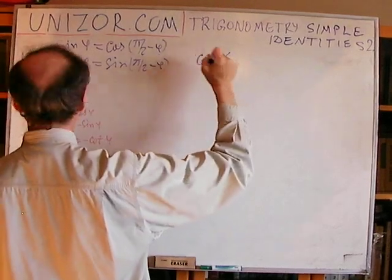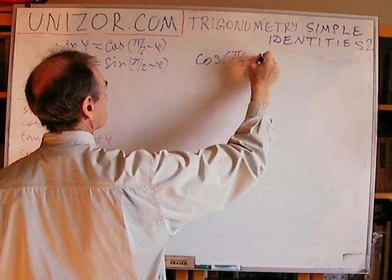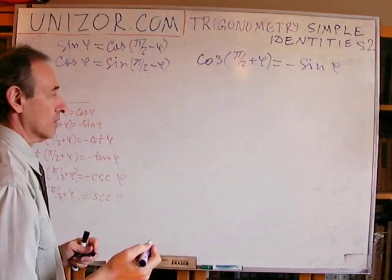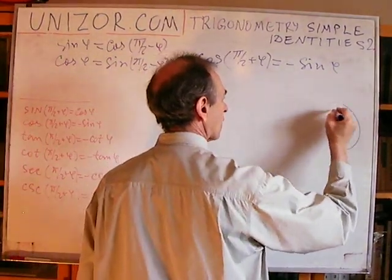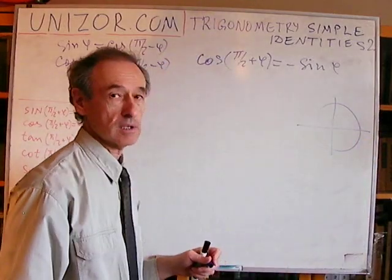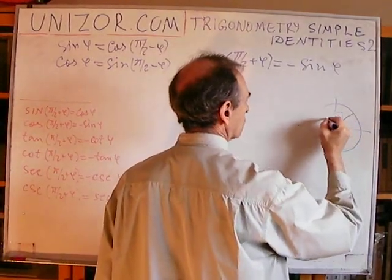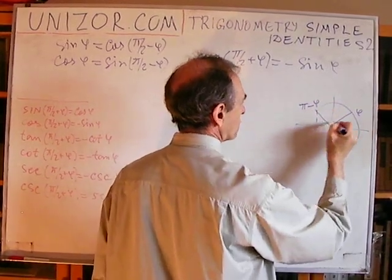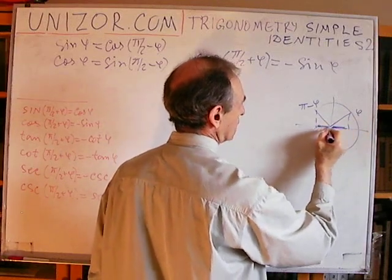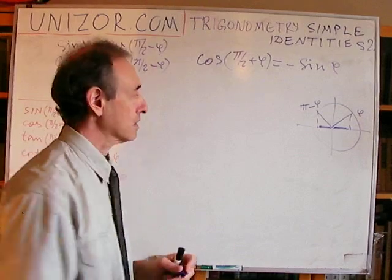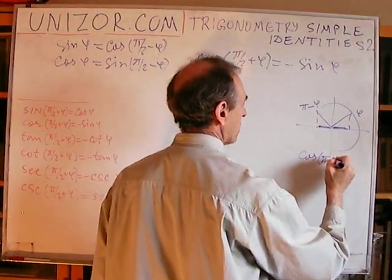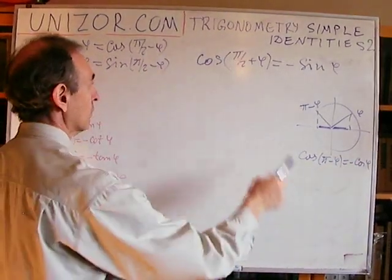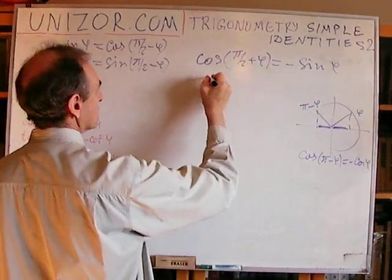Cosine of phi over 2 plus phi is equal to minus sine of phi. Now, again, remember what is a cosine. Cosine is abscissa. And these two, which is phi and phi minus phi, their abscissas are equal in absolute value, opposite in signs. Right? So cosine of phi minus phi is equal to minus cosine of phi. So that's what I'm going to use. And I will use it exactly here. So instead of this, I will put minus. This is the minus. Right?